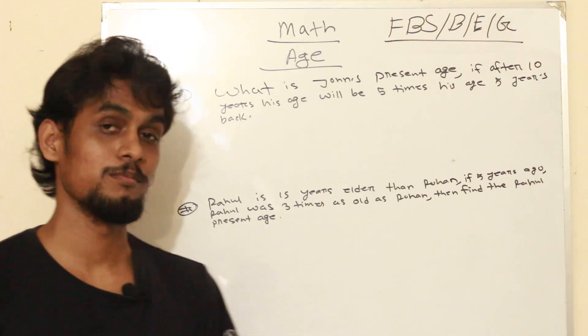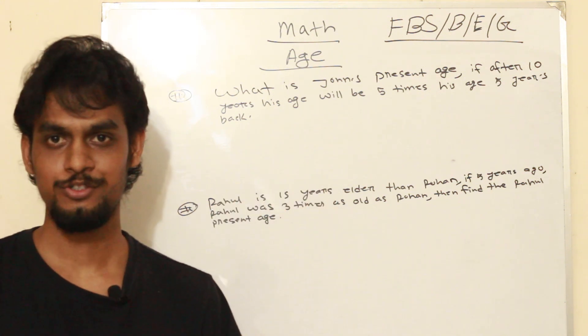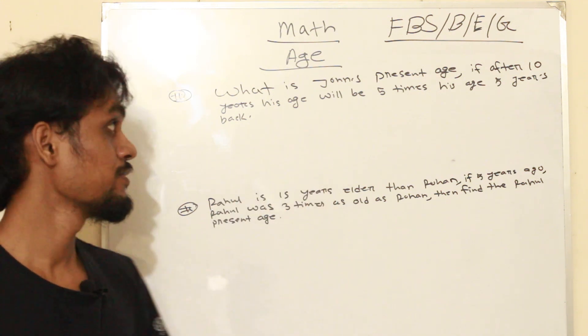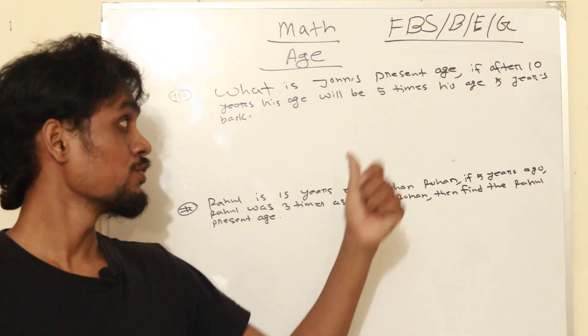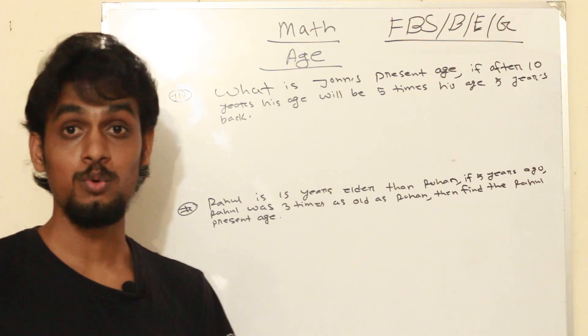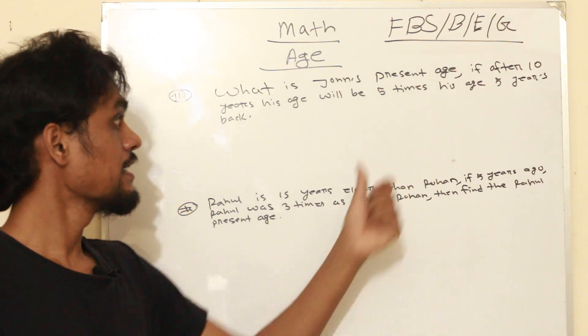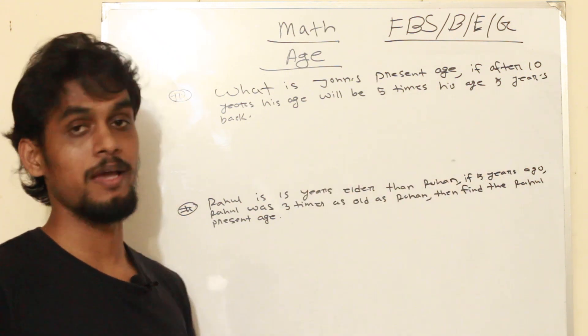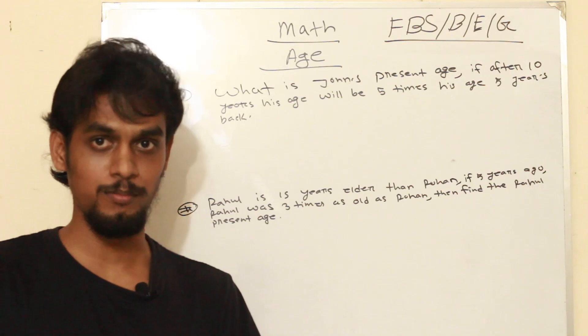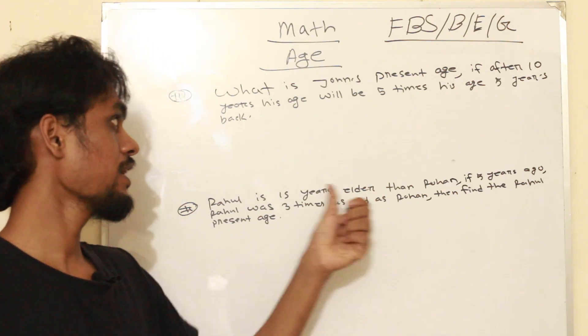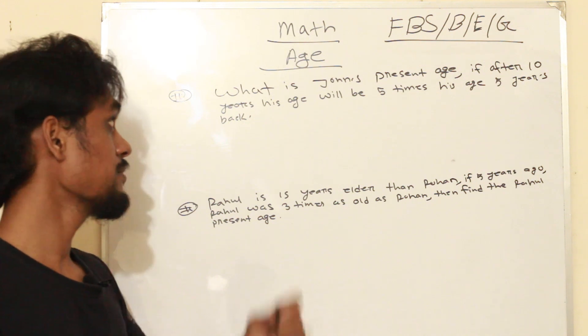The first math problem asks: What is John's present age? If after 10 years his age will be 5 times his age 5 years back.